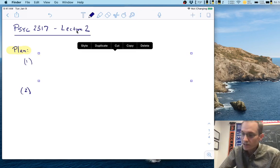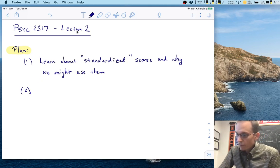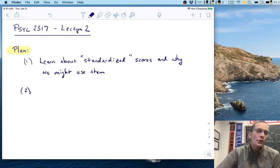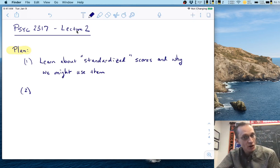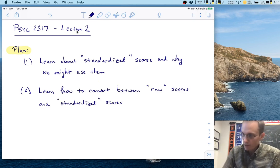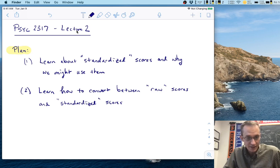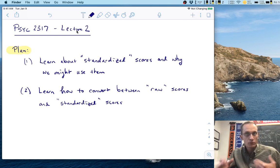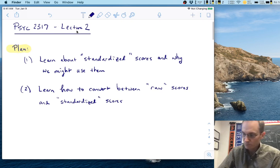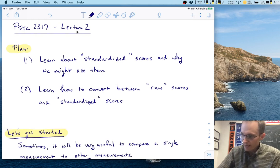So the plan for today is to do two things. First, we're going to learn about standardized scores, what these are and why we might use them. And then we're going to learn briefly how one could convert between raw scores that you might see using some measurement instrument and these new standardized scores. We won't do a lot of problems, but we'll talk about this more from the conceptual point of view. So let's go ahead and get started.